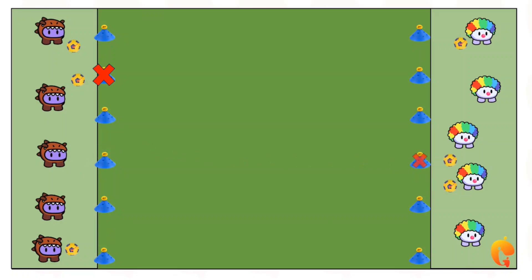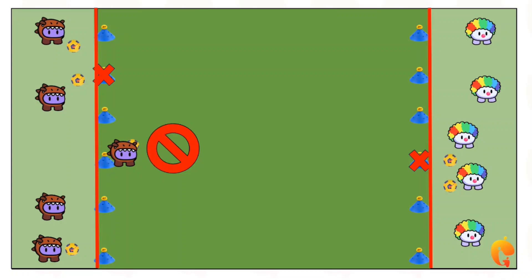It's important that both teams stay behind their end zone line and no player is allowed to stand in front of it or attempt to block or protect their own team's cones.